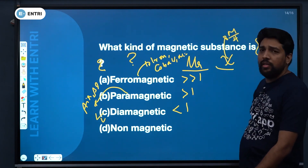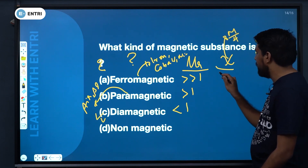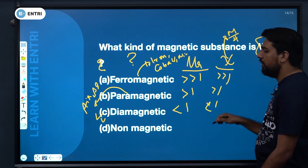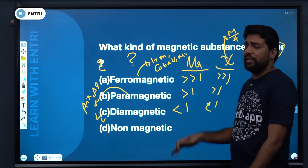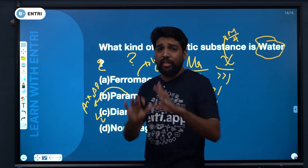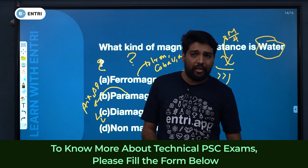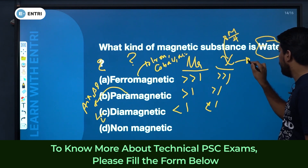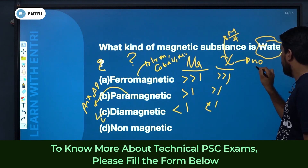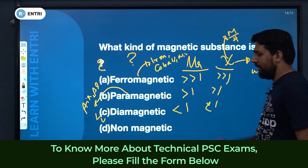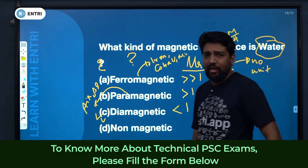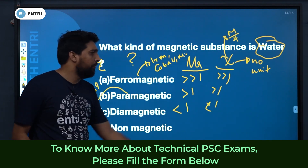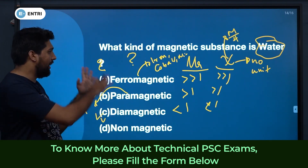Susceptibility χ = M/H (intensity of magnetization divided by magnetizing force). For ferromagnetic: greater than one; paramagnetic: less than one; diamagnetic: same (negative). Susceptibility has no unit — it is dimensionless. μᵣ also has no unit.